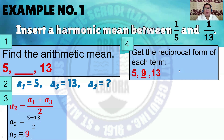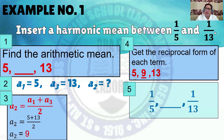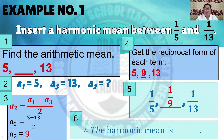All you have to do is get the reciprocal form of each term. Take the reciprocal of 5, 9, and 13. The reciprocal of 5 is 1/5. The reciprocal of 13 is 1/13. The reciprocal of 9 is 1/9. Therefore, the harmonic mean is 1/9.